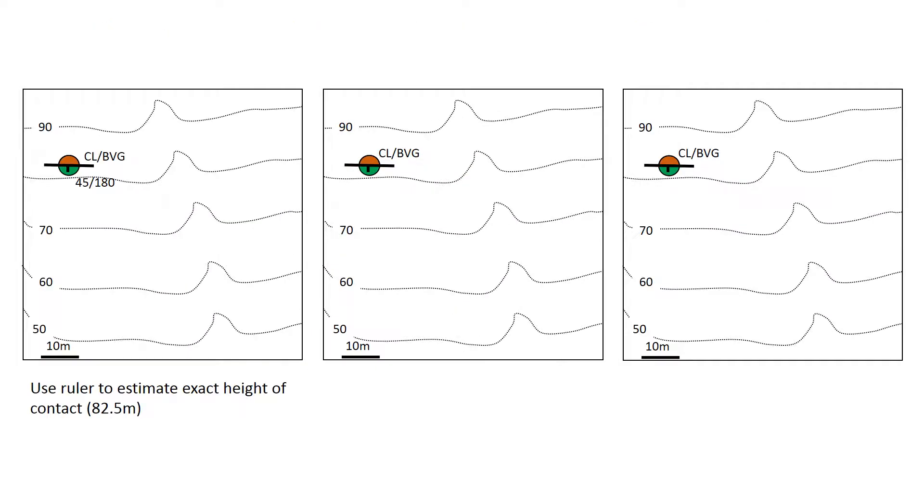So the first step to do is to look at the actual height of the contact that we found. So in idealized examples you might have done for practice, the contact might occasionally be exactly on this contour, so we need to work out how high it is and that's just a straightforward extrapolation between in this case the 80 meter and 90 meter contour. Use a ruler to do this if you're doing it in the field.